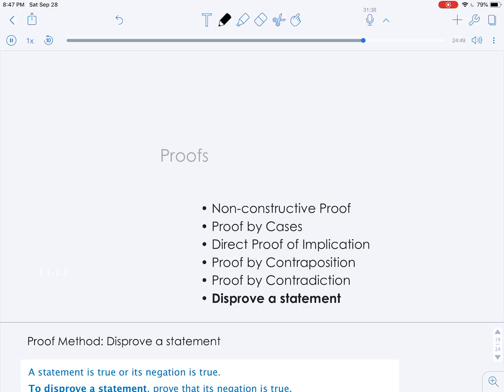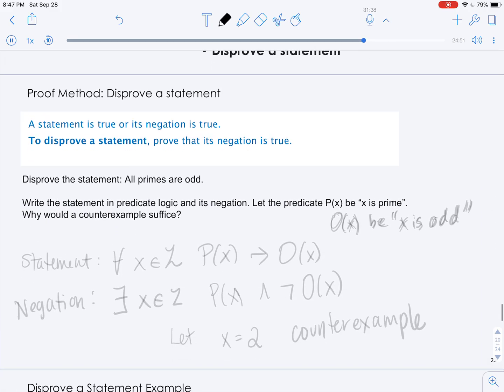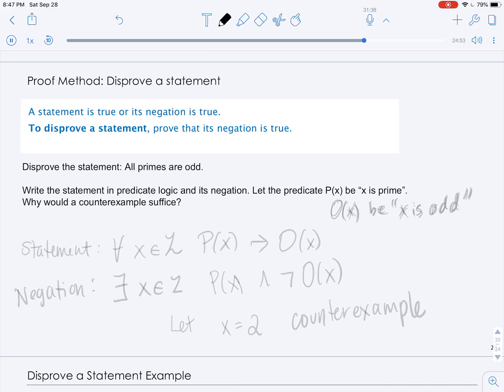Now we'll discuss how to disprove a statement. A statement is true or its negation is true. So in order to disprove a statement, we need to show that its negation is true.